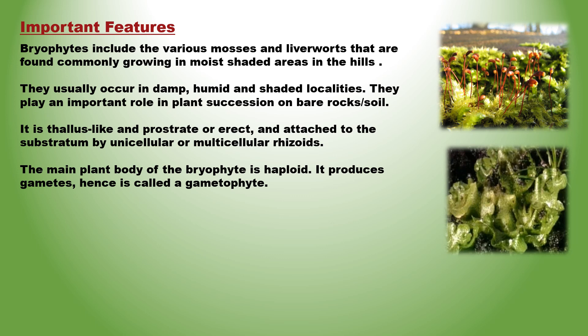They have thin root-like structures called rhizoids which anchor them to the ground. The plant body may be flat as in liverworts, resembling the lobes of a liver, or tiny leafy structures on stalks as in mosses. Moss plant is just about an inch long. They have no specialized tissues like xylem and phloem for conduction of water and other substances from one part to another.